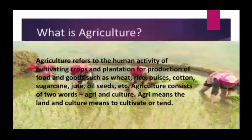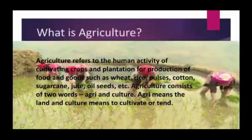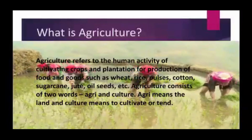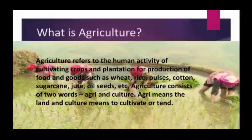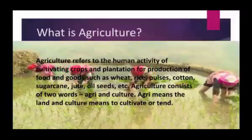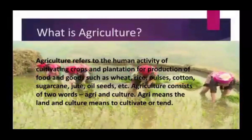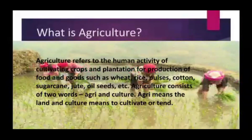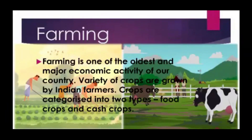Agriculture refers to the human activity of cultivating crops and the production of food and goods such as wheat, rice, pulses, cotton, sugarcane, jute, oilseeds, etc. Agriculture consists of two words: 'agri' and 'culture.' Agri means the land, culture means to cultivate. Farming is one of the oldest and major economic activities of our country.